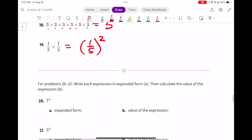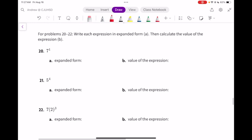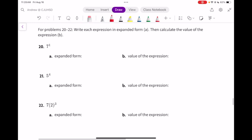In our next set, we're going to go backwards. We're going to take the expression and expand it. This is 7 to the 1st power. That just means 7. The value of that is just 7. 21 is 5 to the 4th power means 5 times 5 times 5 times 5. The value of the expression is the number 625.